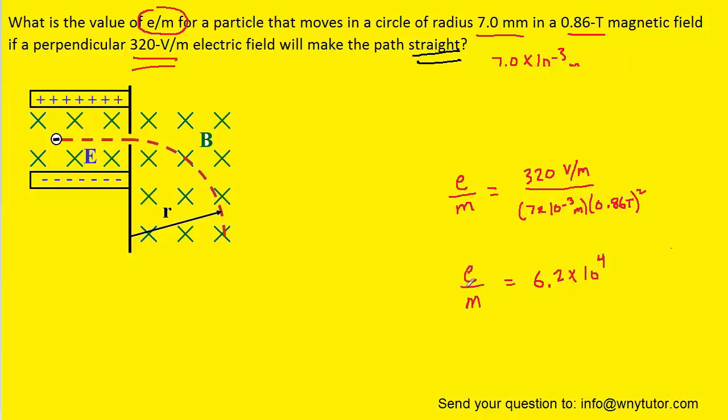And since we calculated charge divided by mass, we would need to use the unit of charge divided by mass. Charge is measured in coulombs, mass is measured in kilograms. So this becomes the correct answer.